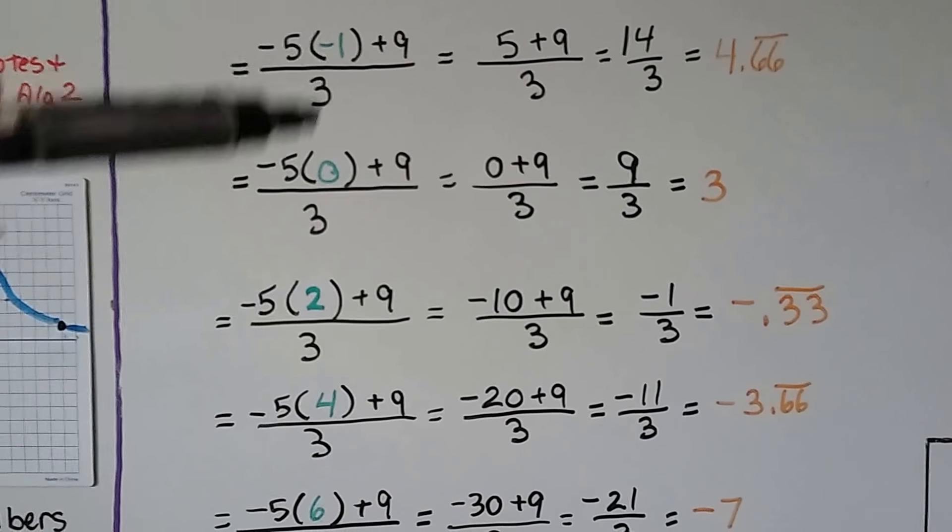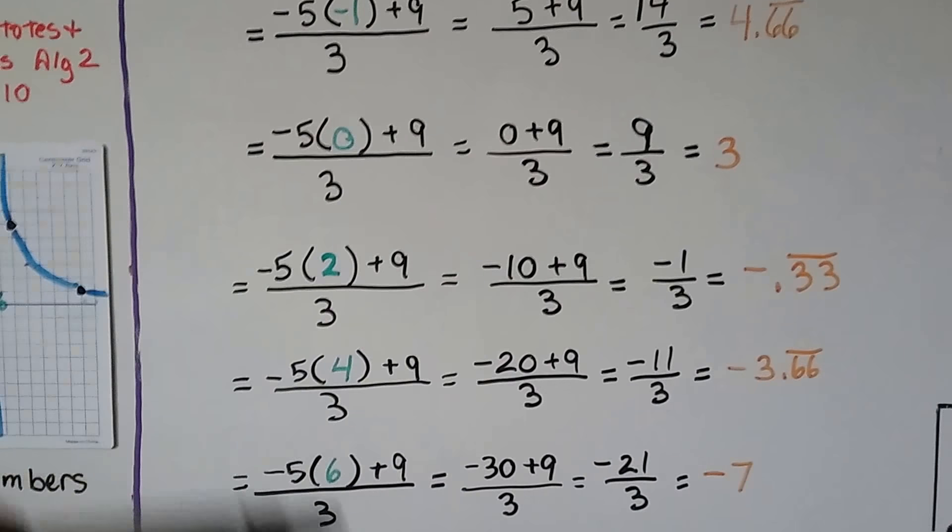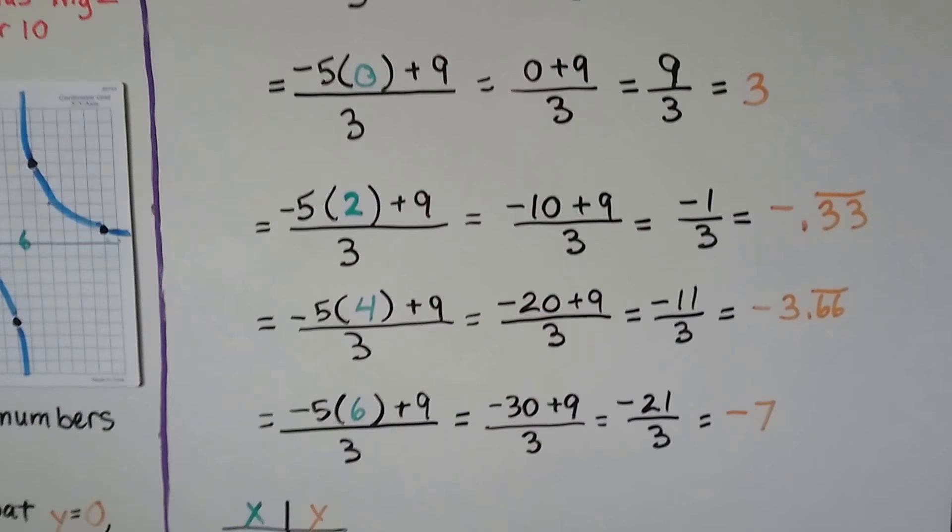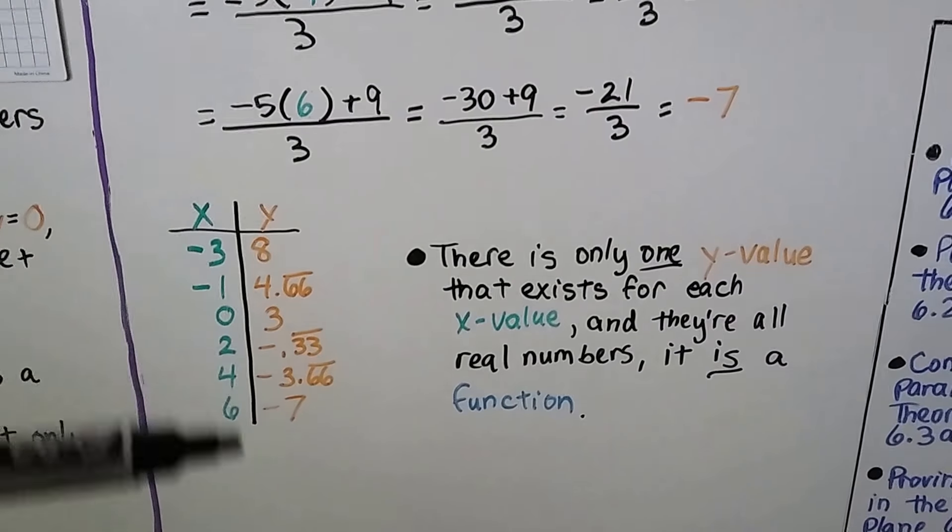And you notice I don't do them right next to each other. I went 2, 4, 6, because I'm trying to make points farther apart so it's easier to graph. We make our table of values.